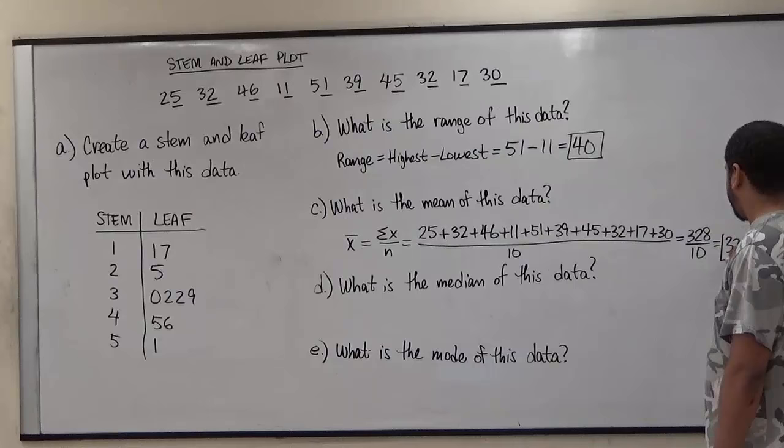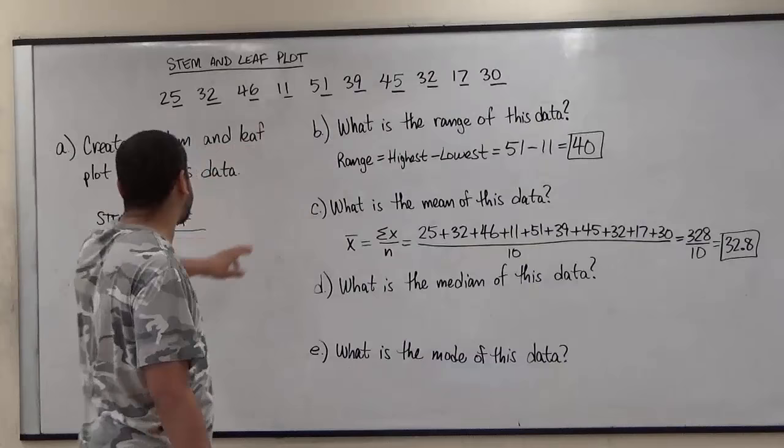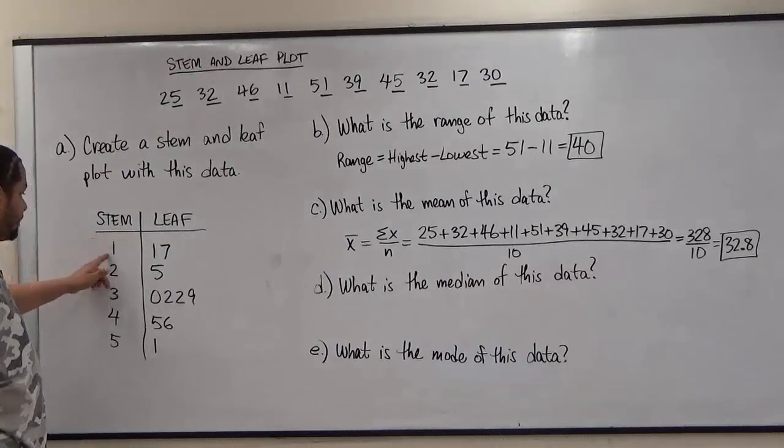Following the mean, we're going to start by doing the median. Now to do the median, we have to arrange the data in order. We're going to go from lowest to highest. Instead of looking at this to do that, we're going to use our stem and leaf chart. We're going to take each stem with each number.